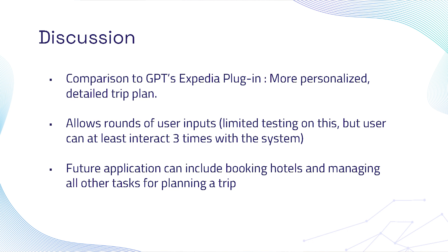Our system also allows users to improve on our preliminary plan. Initially, our scope was for the user to interact with the system only one time, but as we developed more into the system, we were able to support at least three interactions. Every time, our system generates a different plan based on the additional information provided. For future work, we could think about adding more capabilities, such as booking hotels for the user or managing other tasks.